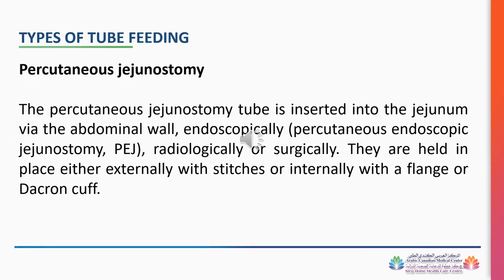Percutaneous jejunostomy: The percutaneous jejunostomy tube is inserted into the jejunum via the abdominal wall, endoscopically (percutaneous endoscopic jejunostomy, PEJ), radiologically, or surgically. They are held in place either externally with stitches or internally with a flange or Dacron cuff.